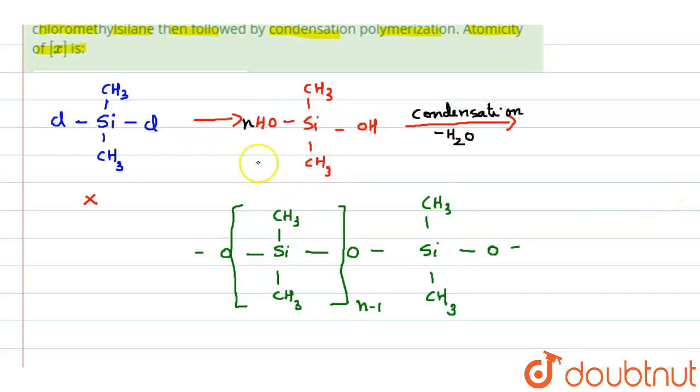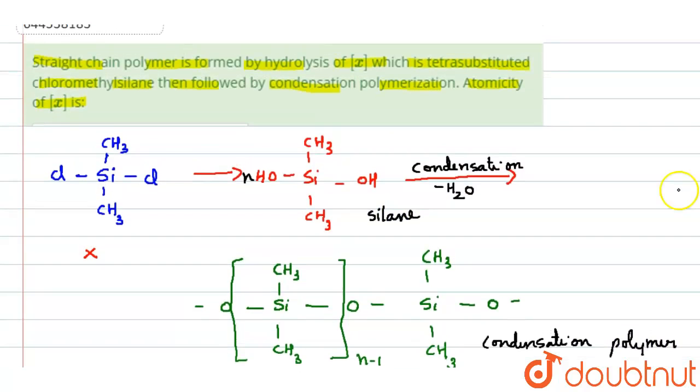So we got a condensation polymer. This structure, whatever we got, is condensation polymer of a silane. This is a silane. So silane we got from hydrolysis, this is hydrolysis, isn't it? Hydrolysis is adding water H2O, hydrolysis of x.